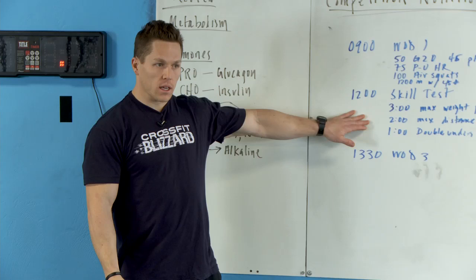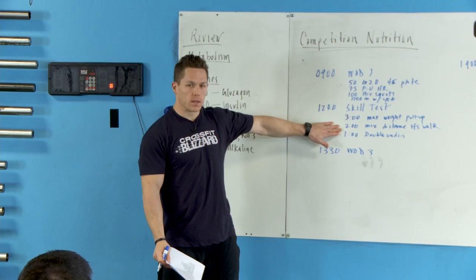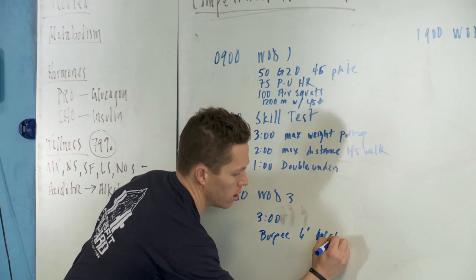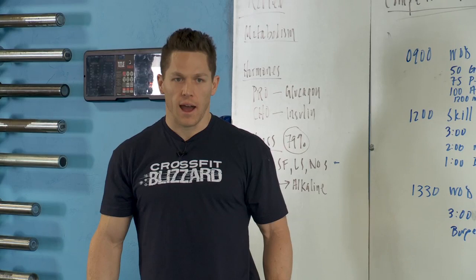Okay, now with that said, workout three, this is super easy: three minutes burpees over a wall, six foot wall. Yeah, super glycolytic, super hard. How fast can you go? How long can you maintain that sort of workout?